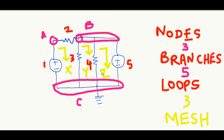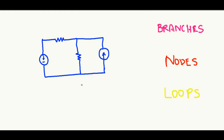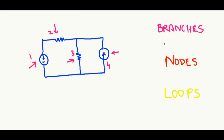Suppose we have a circuit with a 10-volt source, a 5-ohm resistor, a 6-ohm resistor, and a 2-ampere current source. We first need to identify the number of branches. The number of branches is calculated using the total number of components. We have component one, component two, component three, and component four — so there are four branches.